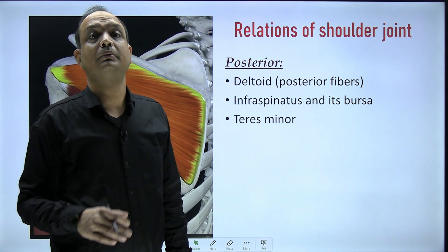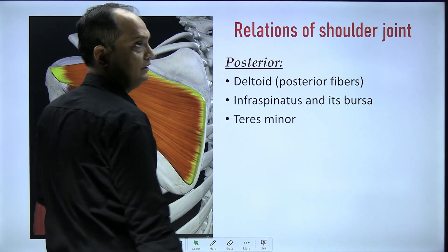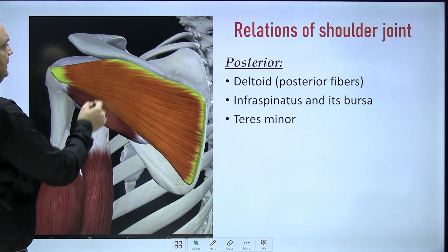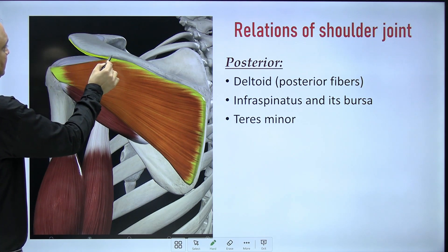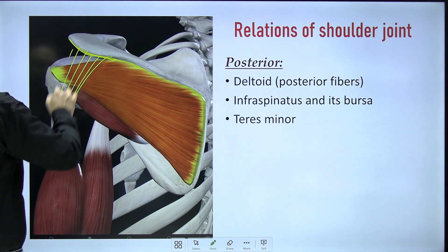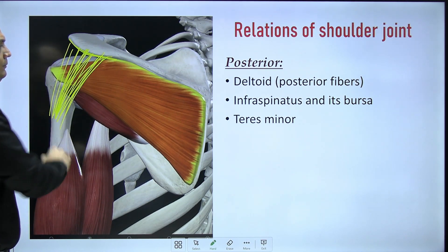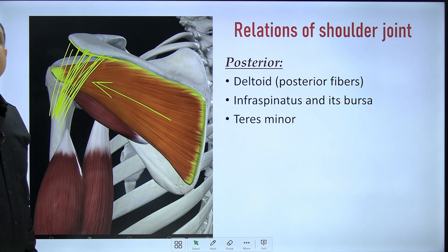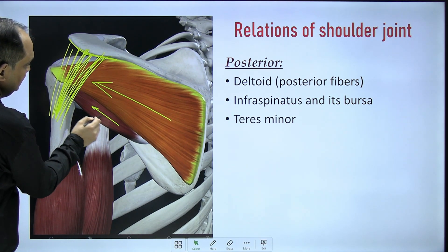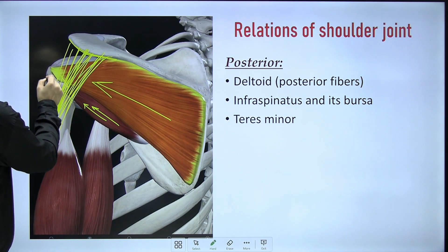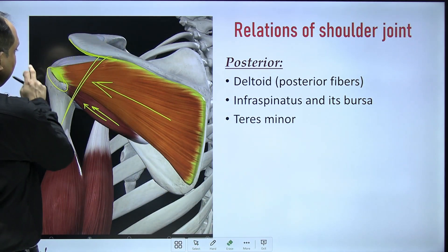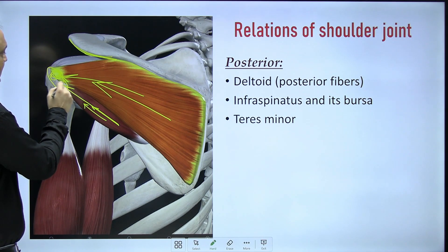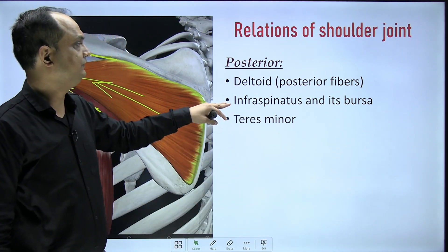For the posterior relation, in the posterior part of the joint you again find the posterior fibers of the deltoid, arising from the spine of the scapula. Deep to the posterior deltoid fibers, you find the infraspinatus muscle going laterally from the infraspinous fossa. Posteriorly, you also have teres minor. The posterior part of the greater tubercle receives both infraspinatus and teres minor, so these two muscles are the posterior relations. There is also a bursa of the infraspinatus.